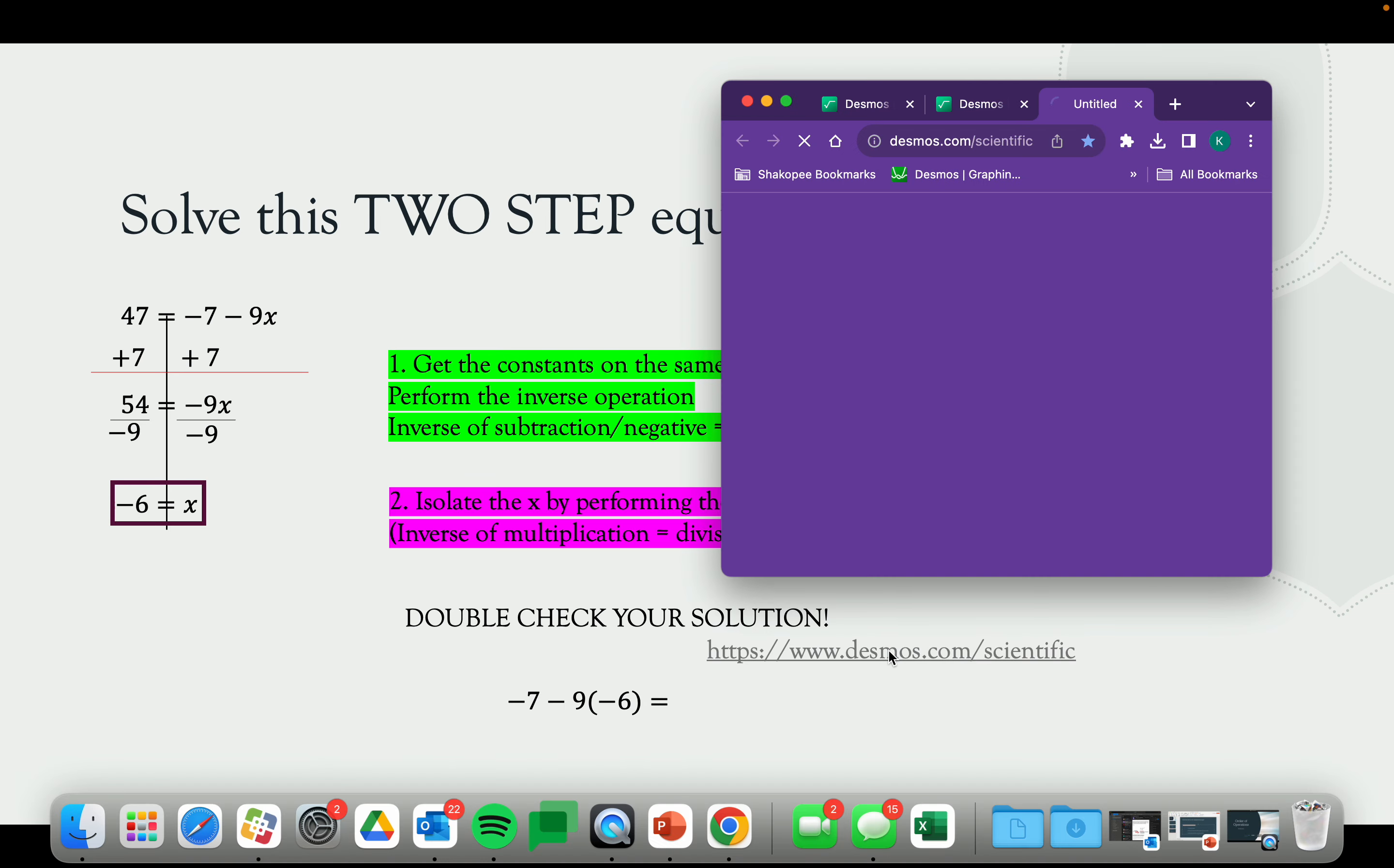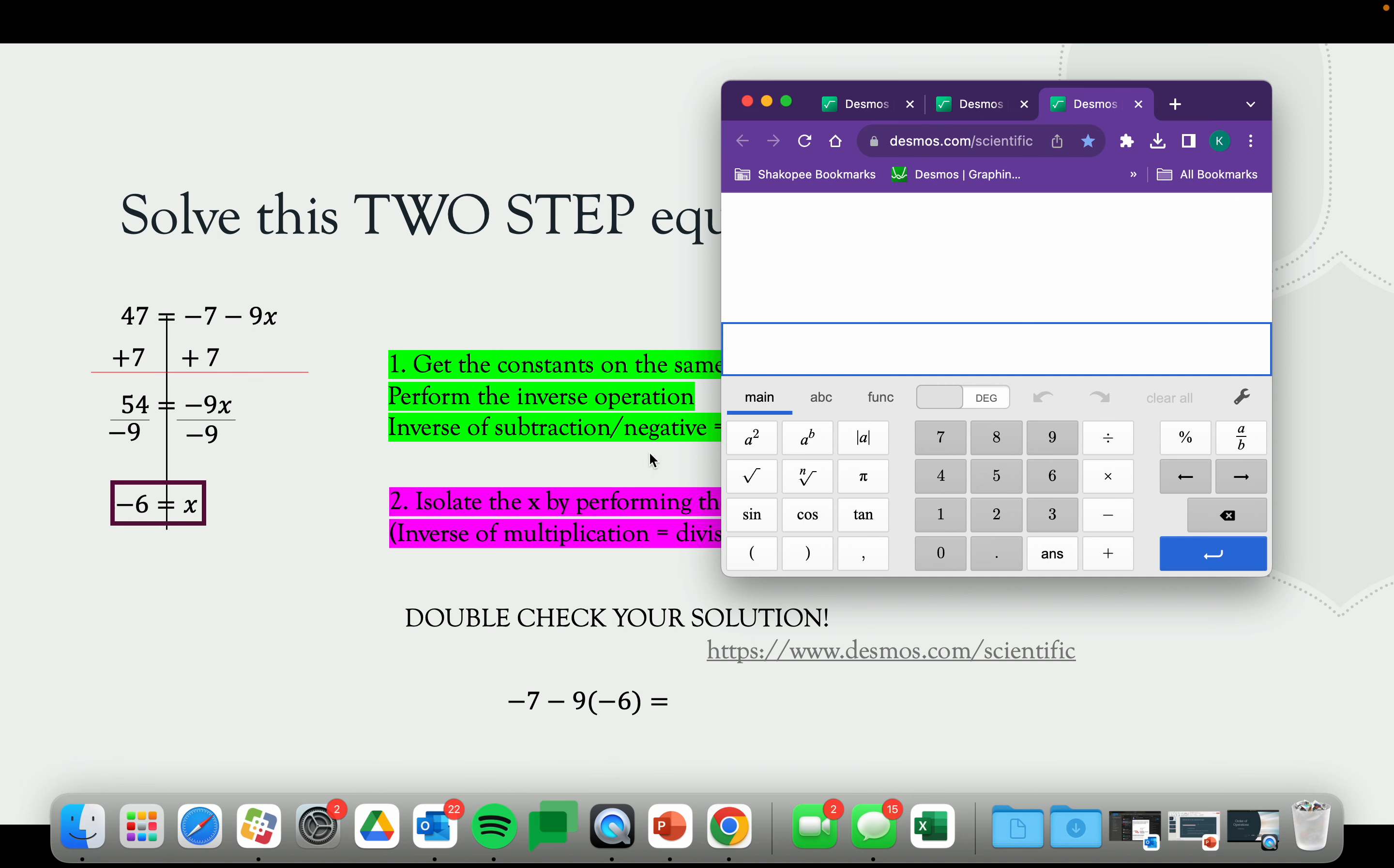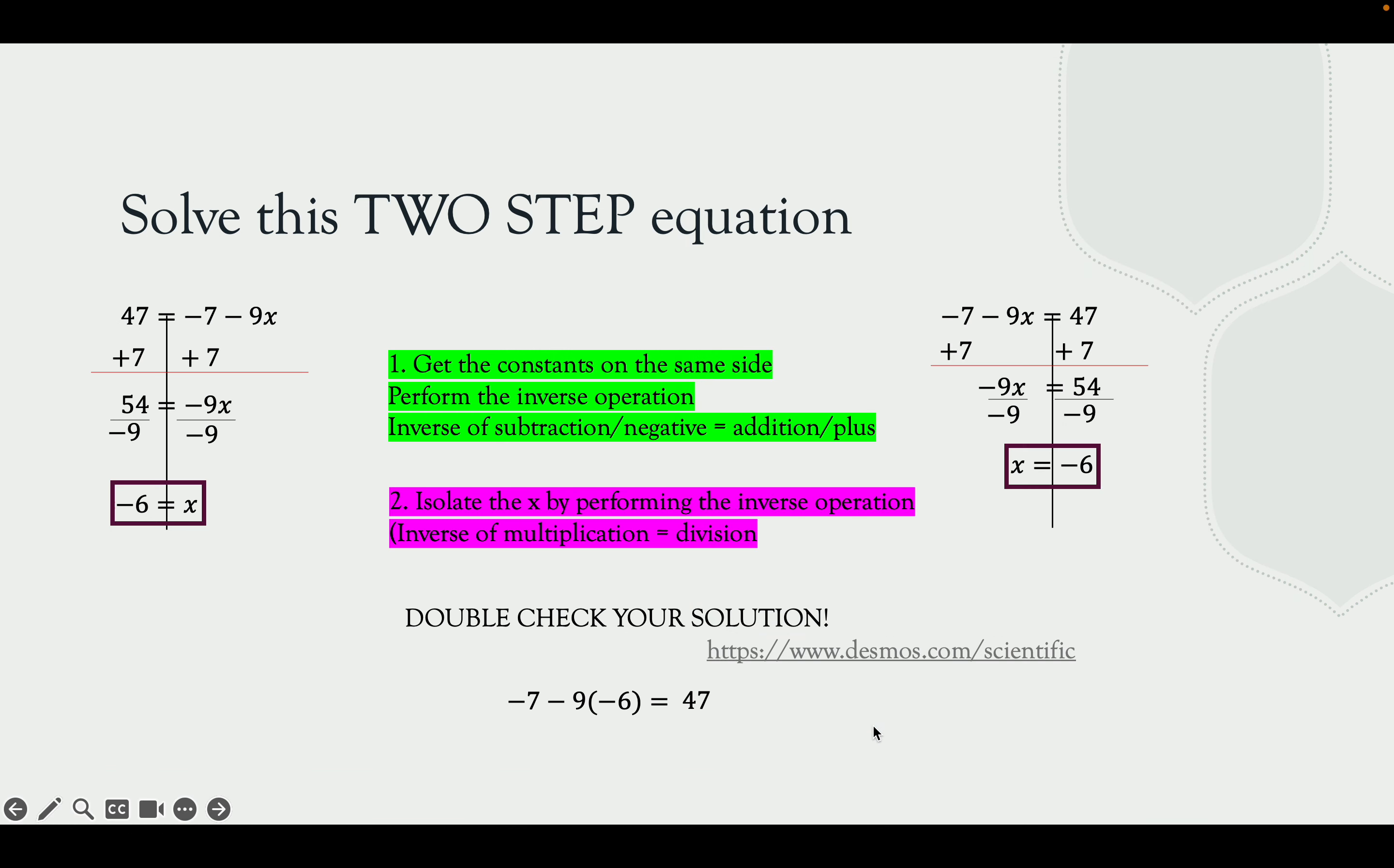So if we click on our calculator here, I can plug this in. So taking our negative 7 minus 9x, well, instead of x, we put our solution of negative 6. And you can use this Desmos Scientific Calculator to show you that we can type it all in. We can see it equals 47. So our solution checks out.